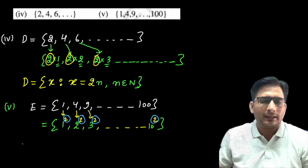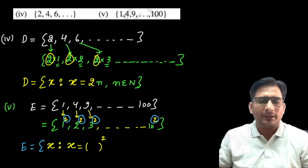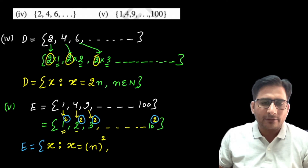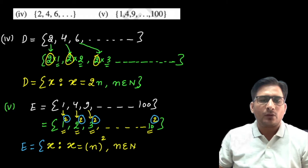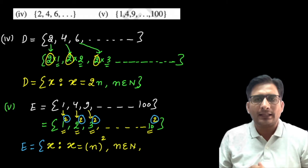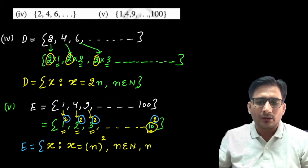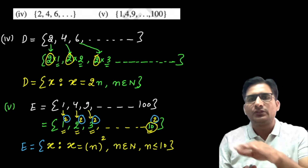In set builder form: {x ; x = n², n ∈ ℕ, n ≤ 10}. Here x equals n², where n is a natural number. The exponent 2 is fixed, and n changes from 1 to 10. Since the last term is 10² = 100, we need a stopping condition: n ≤ 10. This is the answer, and I hope you understand how to convert from roster form to set builder form.